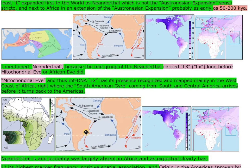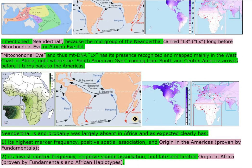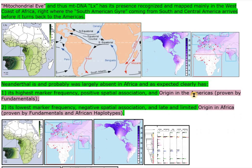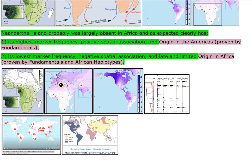Neanderthal is and probably was largely absent in Africa, and as expected clearly has: 1. Its highest marker frequency, positive spatial association, and origin in the Americas, proven by fundamentals. 2. Its lowest marker frequency, negative spatial association, and late and limited origin in Africa, proven by fundamentals and African haplotypes.